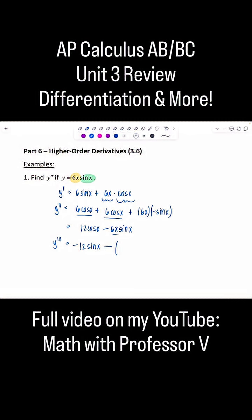So product rule. Let me highlight for you, this is one function, this is the other function. So derivative of 6x is 6, leave sine x alone, plus now leave 6x alone, and then derivative of sine x is cosine x.